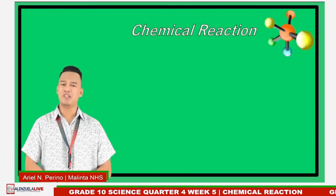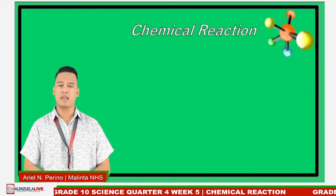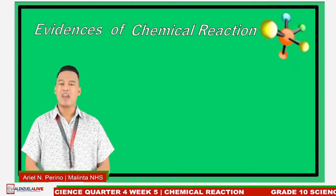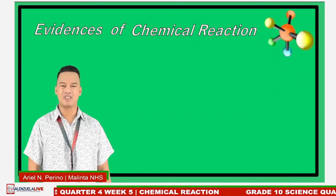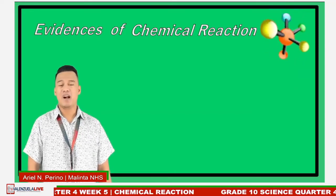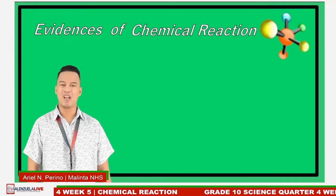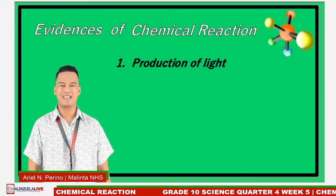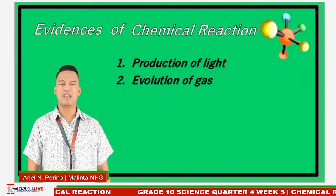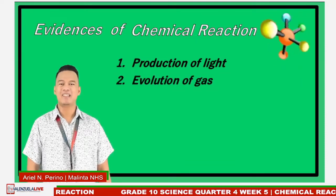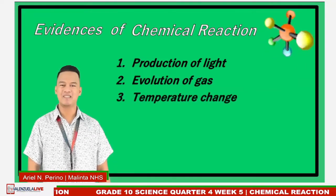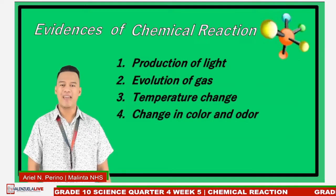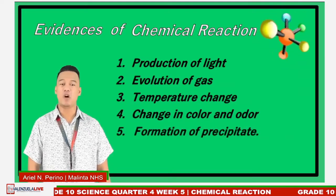There are certain things that help us identify if a chemical reaction has taken place. We call these evidences of chemical reactions. The different evidences are: first, production of light; second, evolution of gas; third, temperature change; fourth, change in color and odor; and lastly, formation of precipitate.